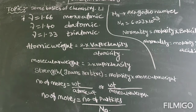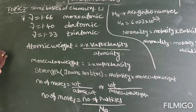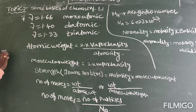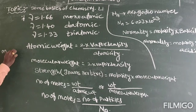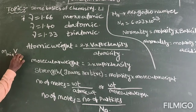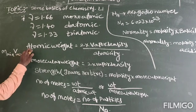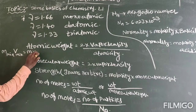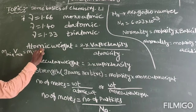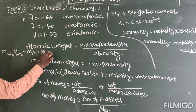The molarity of a mixture: molarity of the mixture × volume of the mixture = M1V1 + M2V2.